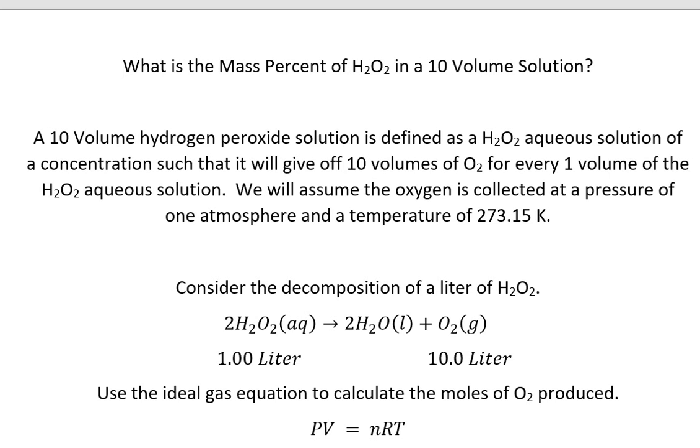Hydrogen peroxide, of course, is used to dye hair, to remove the pigments in hair. A 10-volume hydrogen peroxide is defined as a hydrogen peroxide aqueous solution of such a concentration that it will give off 10 volumes of oxygen for every one volume of the solution.